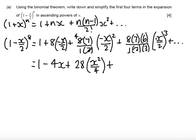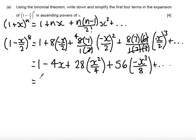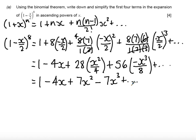For the cubic term, I can cancel the denominator completely: 1 times 2 times 3 with 6, leaving 8 times 7 which is 56, and (-x/2) cubed gives -x cubed over 8. Tidying up: 28 divided by 4 is 7, giving +7x squared. The next term is negative and 56 divided by 8 is also 7, giving -7x cubed. So the expansion is 1 - 4x + 7x² - 7x³ + ...